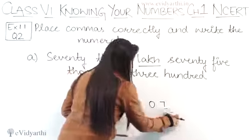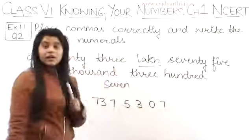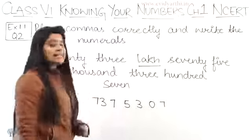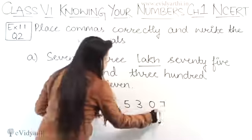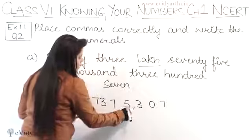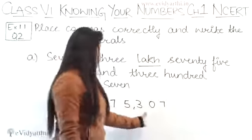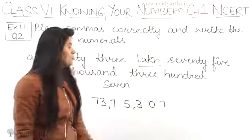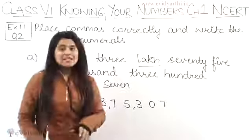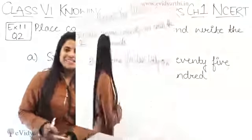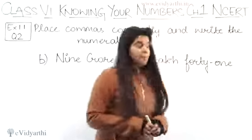Let's write this. Right. Now we have to put the comma. Since we have to put the Indian system, 3 digits from the first comma, then 2 digits. Right. So 73,75,307. Okay. So this was the A part.